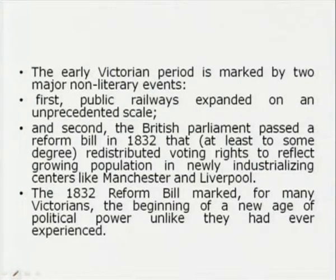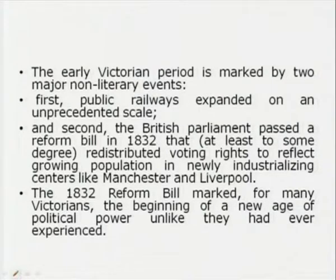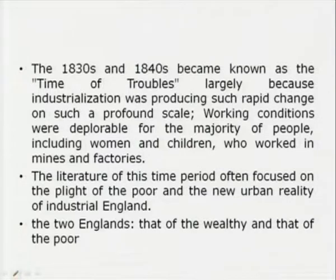The early Victorian period is marked by two major non-literary events. First, public railways expanded on an unprecedented scale, so communication was very quick and people could travel from one destination to the other. Second, the British Parliament passed a reform bill which was a landmark in itself — Manchester and Liverpool gained voting rights to reflect growing population. The 1832 reform bill marked, for many Victorians, the beginning of a new age of political power unlike they had ever experienced.